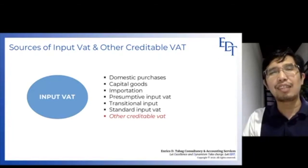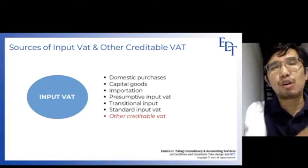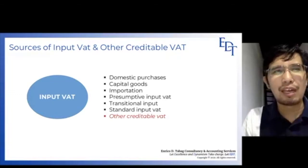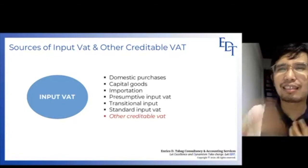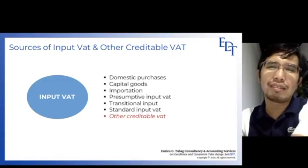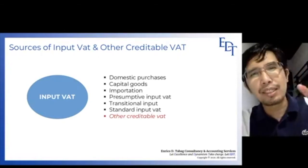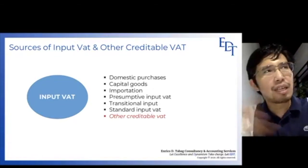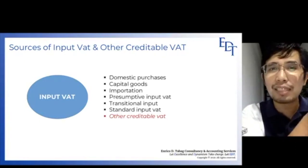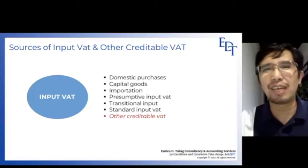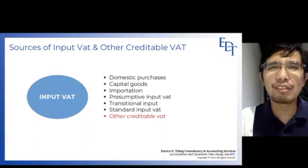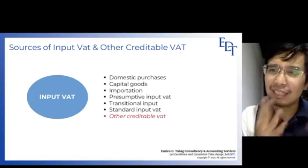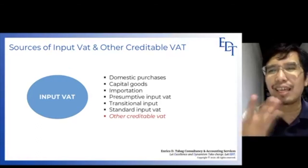The seller's journal entry credits sales 100 pesos and credits output VAT — a liability account — 12 pesos. As the buyer, you debit purchases 100 and debit input VAT 12, crediting cash 112. This input VAT account is allowed only if both the buyer and the seller are VAT-registered. If only one of you is VAT-registered, there is no input VAT account.